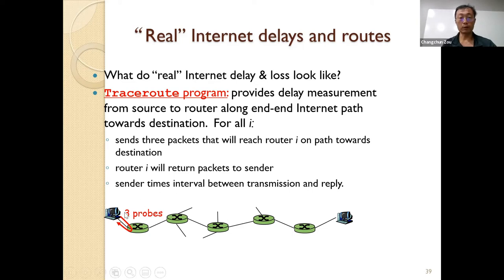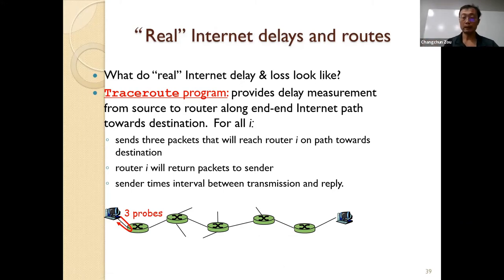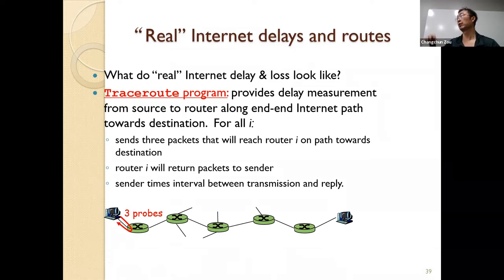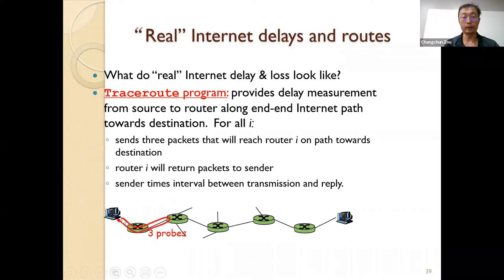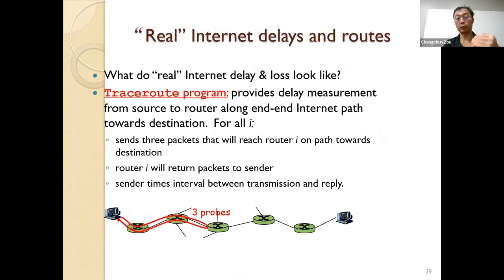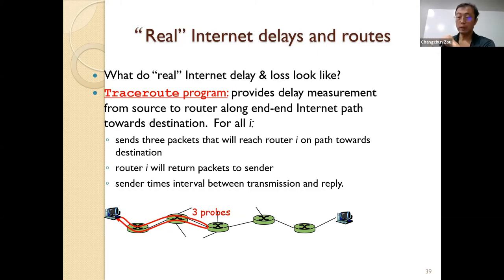So for traceroute, the first three packets have TTL value 1, dropped by the first router, which sends back an ICMP notification. From the response, the traceroute program knows the first router's IP address and round-trip time. Then it sends TTL=2 packets, dropped by the second router, and continues recursively until reaching the destination. In this way you know how many hops the packet goes through and which physical links it traverses.